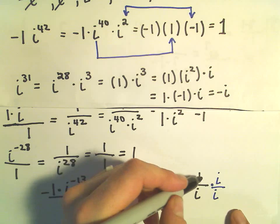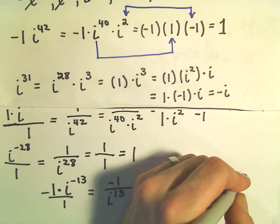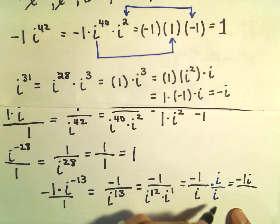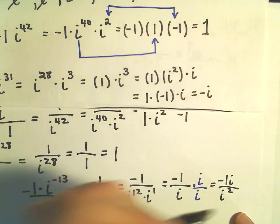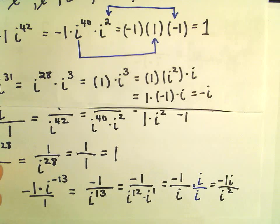Okay, so in the numerator we would have negative 1 times i. In the denominator, we would have i squared.